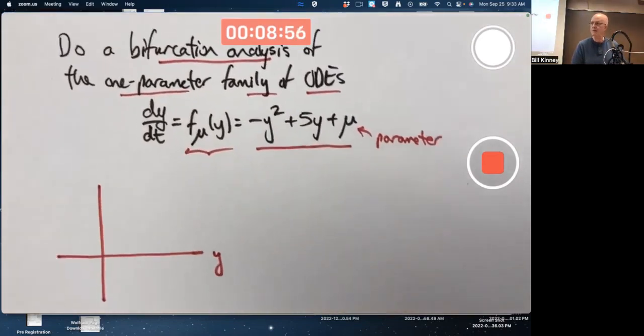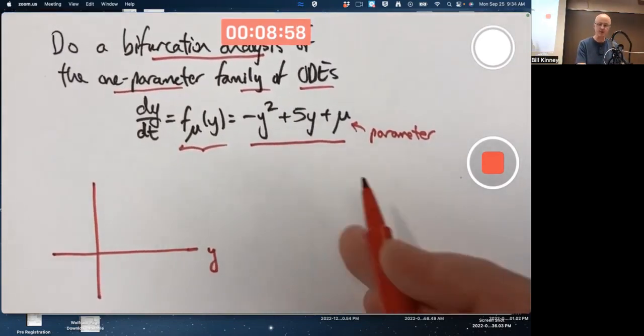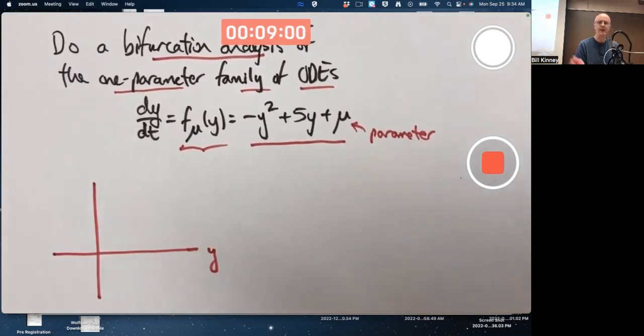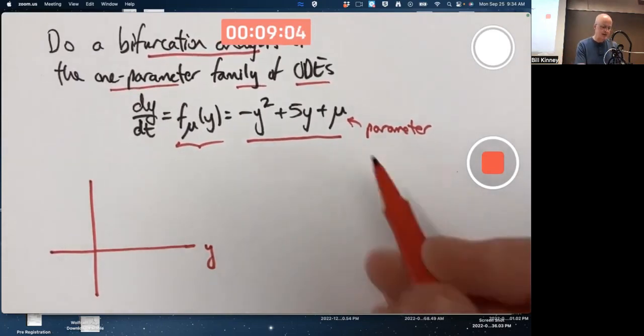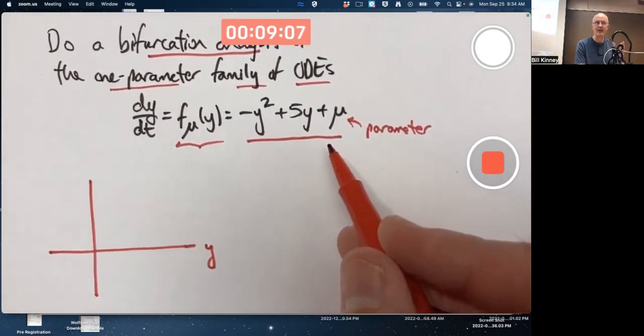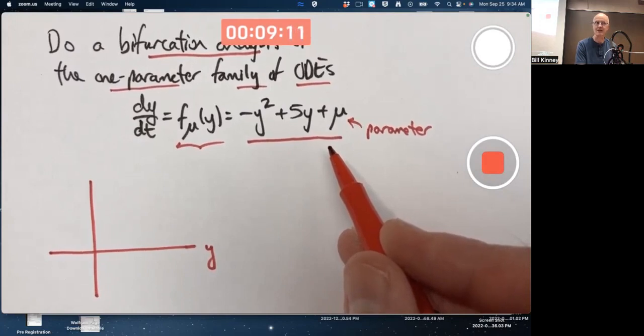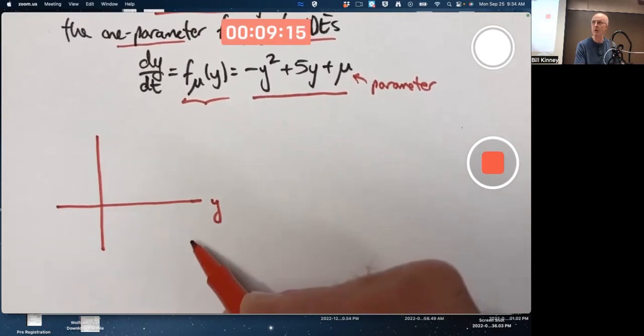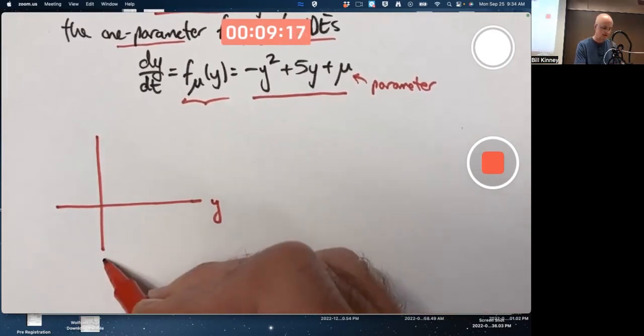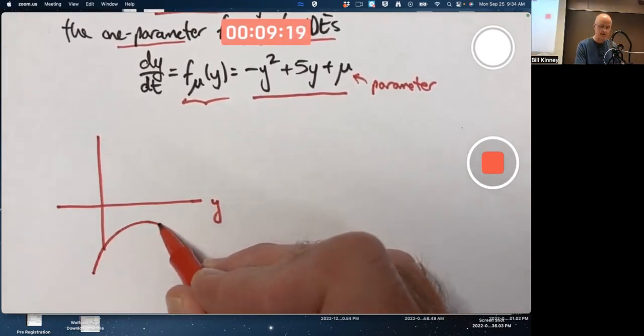So let me go ahead and first draw the graph of this function for different values of mu. And I'm not even going to specify what mu is. If mu is sufficiently negative, how negative? I don't know exactly. Negative 20 is probably good enough. Maybe negative 10 is good enough. The graph is going to be an upside-down parabola that's completely below the horizontal axis, something like this.